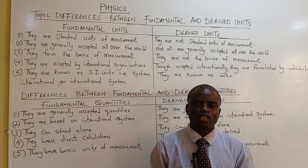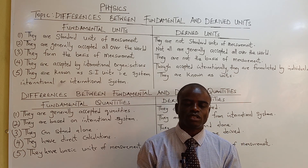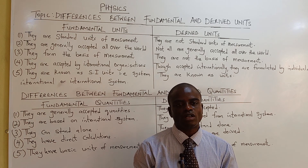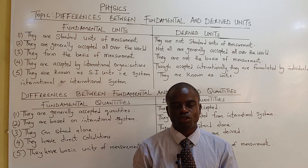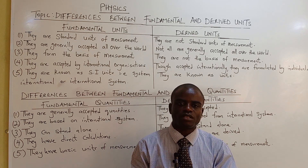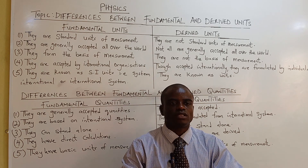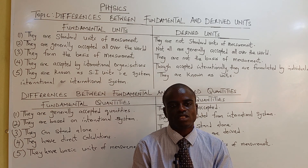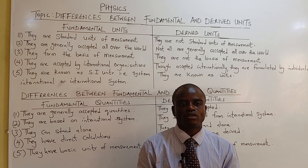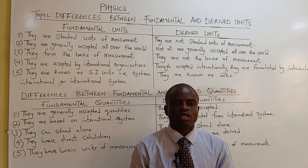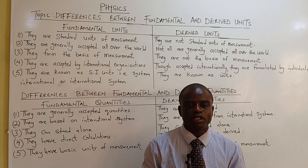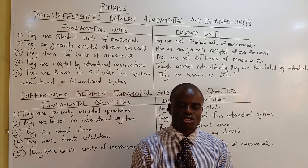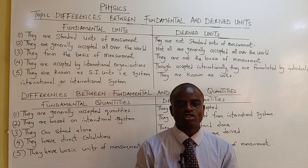An example of a derived quantity is volume, which has the unit of meter cubed — that is length times breadth times height, each measured in meters, giving meter cubed. We also have area, which is length times breadth, giving meter squared as the unit of area.